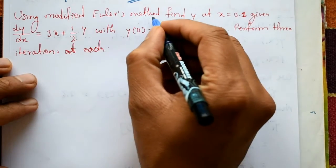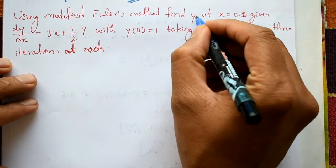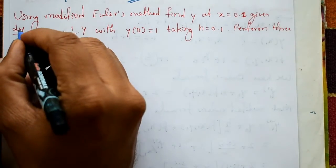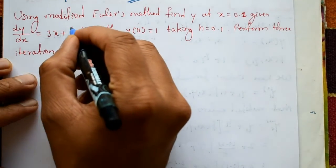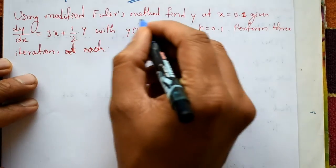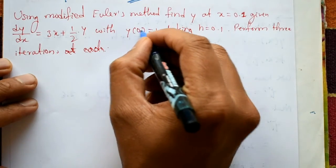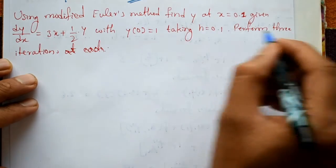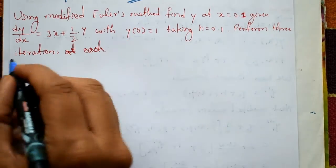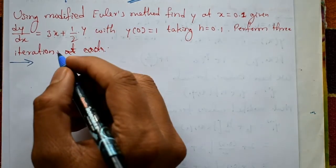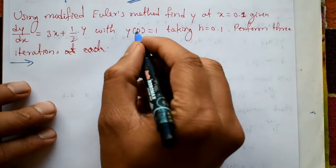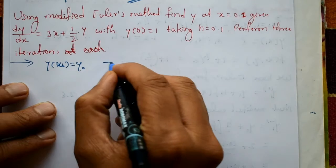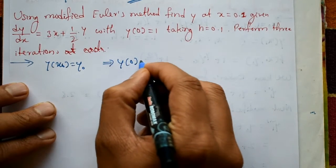Using the modified Euler's method, find y at x = 0.1 given dy/dx = 3x + y/2, with initial condition y(0) = 1, taking step size h = 0.1. Perform only 3 iterations. First, take the initial condition: y(x0) = y0, that is y(0) = 1.